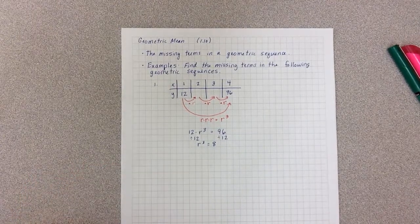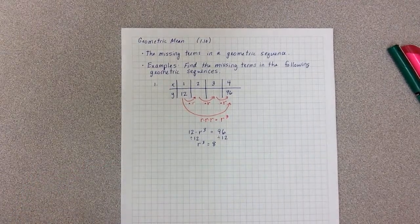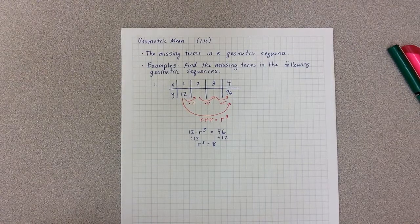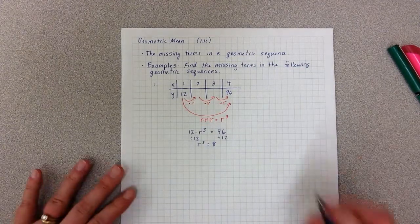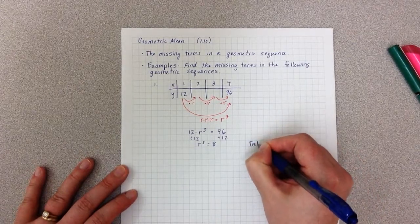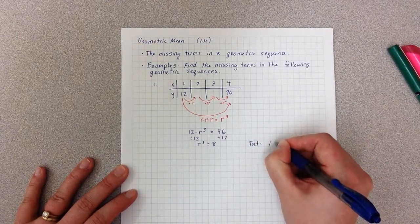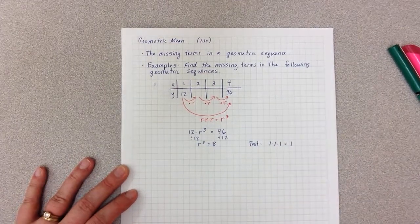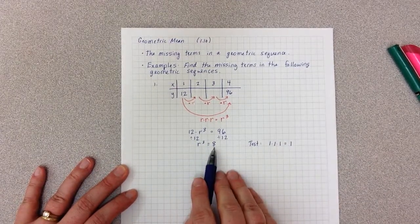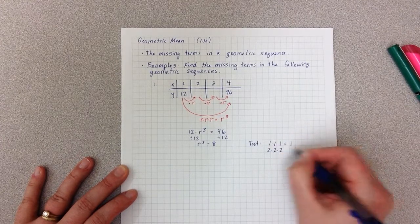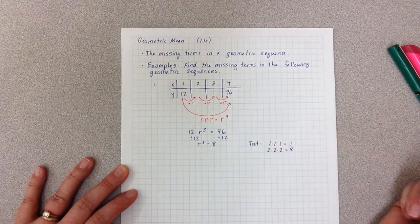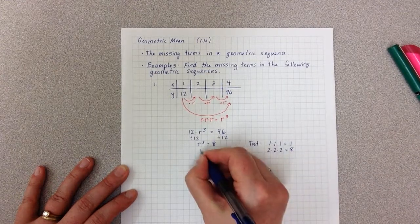Now at this point, we don't have a way to just punch this into our calculator, although there is a formula — but you won't discover that until Math 3. So instead, I'm going to take out my calculator and test values. I'll start with 1: 1 times 1 times 1 is 1, which isn't 8. So I'll test 2: 2 times 2 times 2 equals 8. Which means my R is 2.